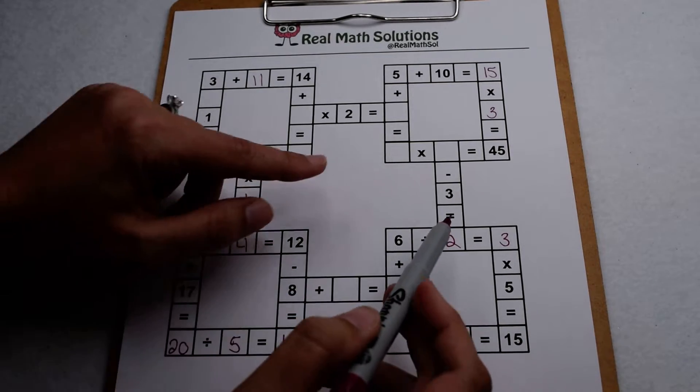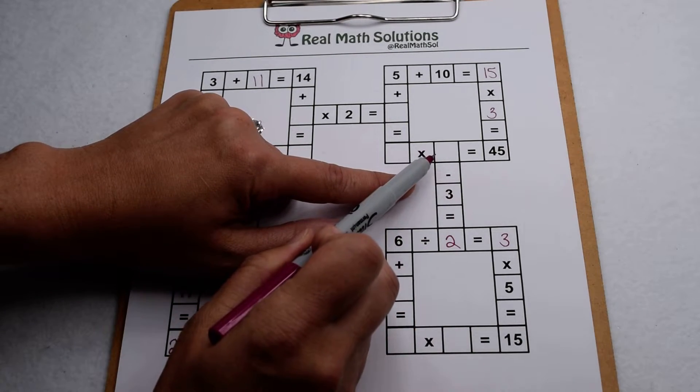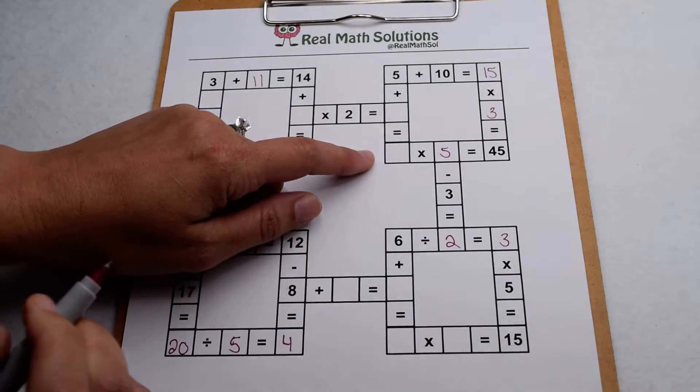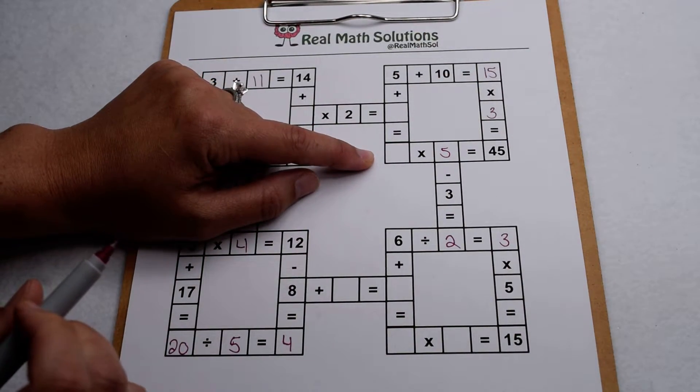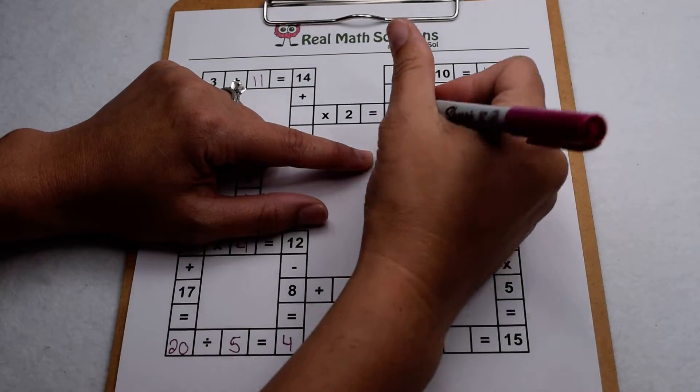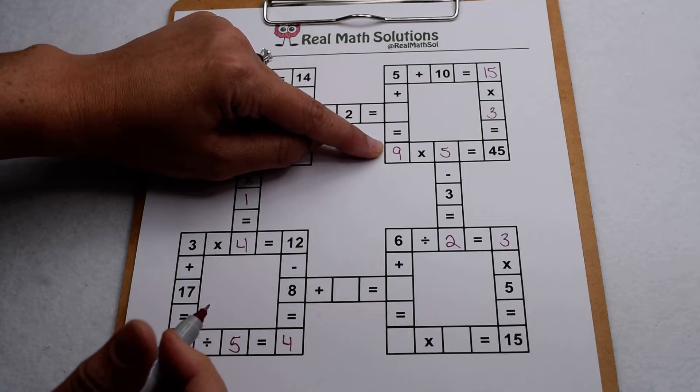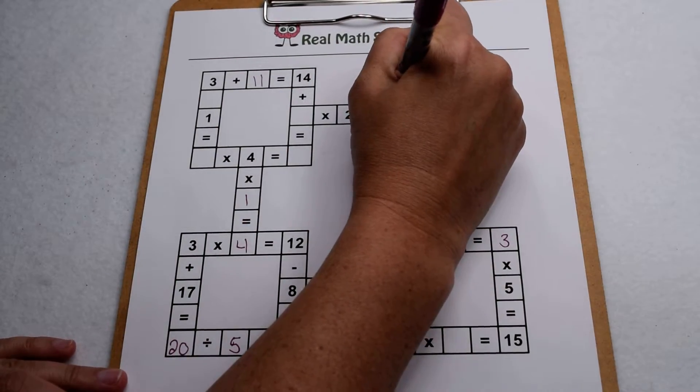I can't do the rest of this yet so I'm gonna work my way back up. Now I know something minus 3 gives me 2 so that something is going to be 5. That leads me to this box here because now I know something times 5 gives me 45. So there is my 9 and now we can fill in going down because 5 plus 4 gives me 9.